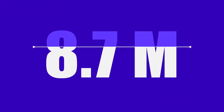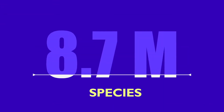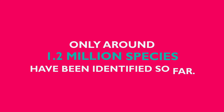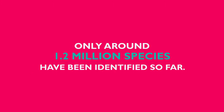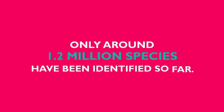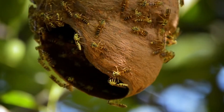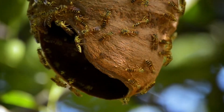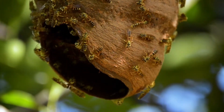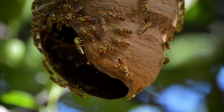In an estimated 8.7 million species of plants and animals in existence, only around 1.2 million species have been identified so far, most of which are insects. This means that millions of other organisms remain a complete mystery.